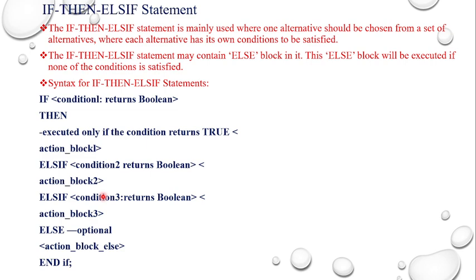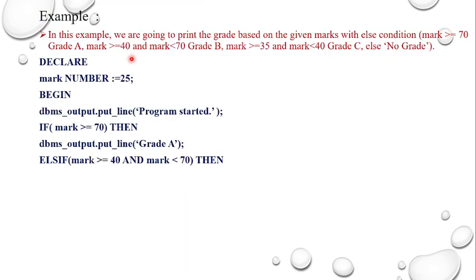Remember, any one alternative from the set will be satisfied based on the condition. In this example, we print a grade based on the given mark: if mark >= 70, grade A; if mark >= 40 and mark < 70, grade B; if mark >= 35 and mark < 40, grade C; else display 'no grade'. This is similar to a switch statement with a default case.